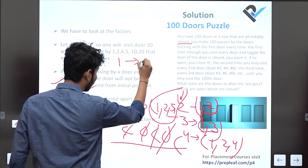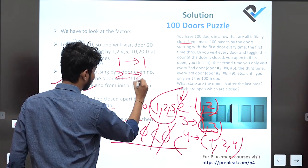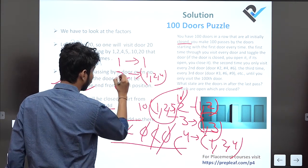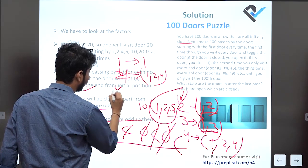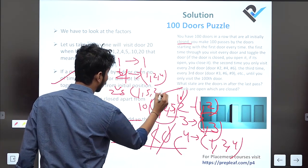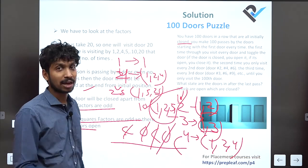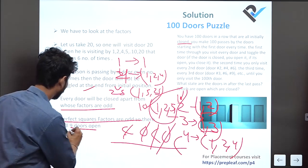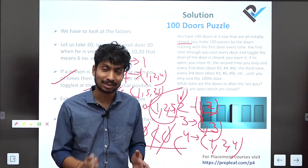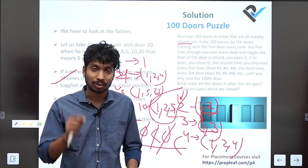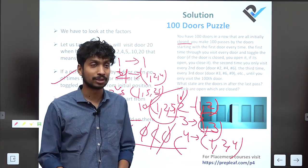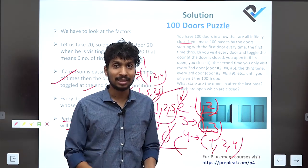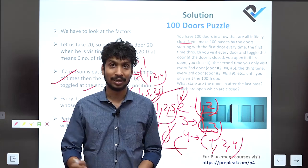For example, 1 has factors {1} — odd count. 4 has factors {1, 2, 4} — odd count. 25 has factors {1, 5, 25} — odd count. So perfect squares have an odd number of factors. The perfect squares from 1 to 100 are: 1, 4, 9, 16, 25, 36, 49, 64, 81, 100 — that's 9 perfect squares. So 9 doors will be open and the rest will be closed. I hope you liked the question and solution — please like our videos and subscribe to our channel, thank you.